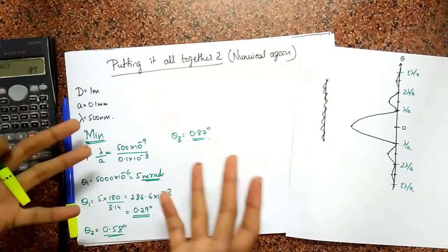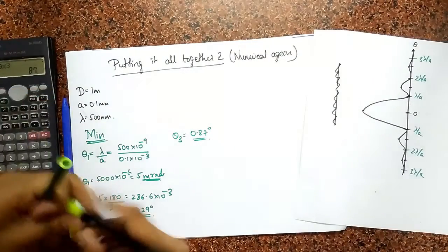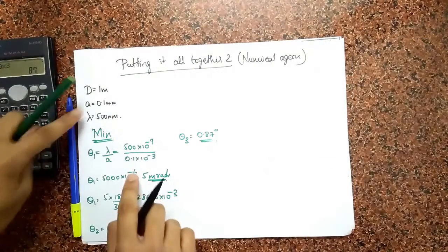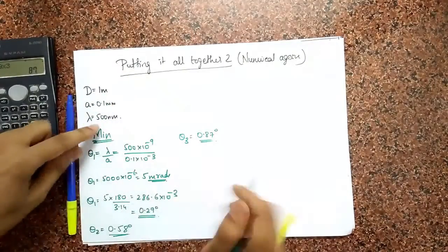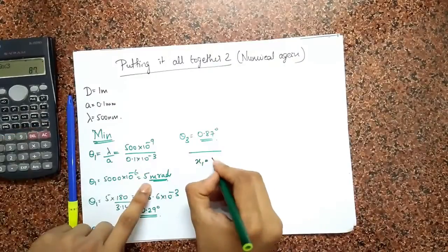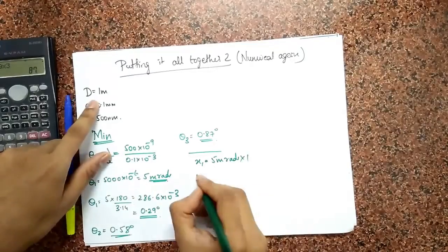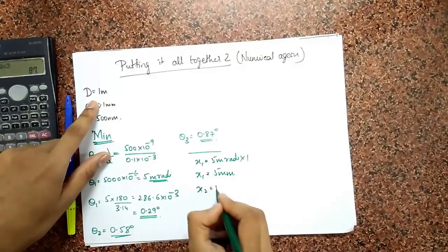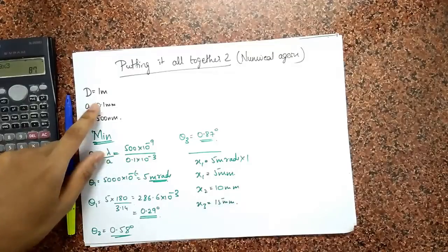If you want the linear width, I have to multiply by d. So linear position of the first minima x₁ is going to be 5 milliradians × 1 meter, which gives 5 millimeters. The next one is going to be at 10 millimeters, and the next one at 15 millimeters, and so on.